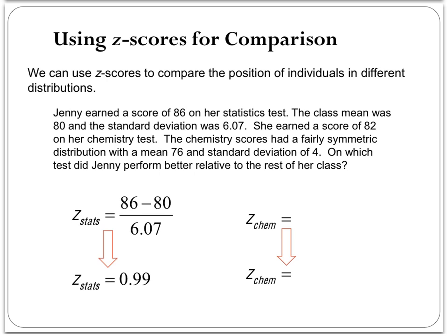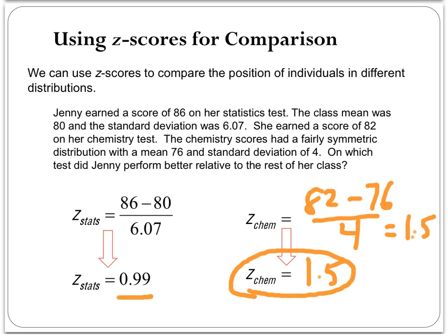So we can use these scores to compare. So if you remember Jenny who scored 86 on her stats test, remember she had a standard deviation of 0.99. Well, she goes in to take a chemistry test. She scores 82 on their chemistry test, but the mean was only 76 there with a standard deviation of 4. So the question was, which one did she perform better on relative to the rest of the class? So I'm going to calculate her z-score of her chemistry test. So that is 82 minus the mean, which is 76, divided by 4. And that comes out to be 1.5. So she has a z-score equal to 1.5. So if you notice here, even though she didn't do as well grade-wise on her chemistry test, she actually scored better in relationship to the rest of the class because her z-score was 1.5, which means she was one and a half standard deviations above the mean in comparison to her stats test, which she was just a little bit under one standard deviation above the mean.